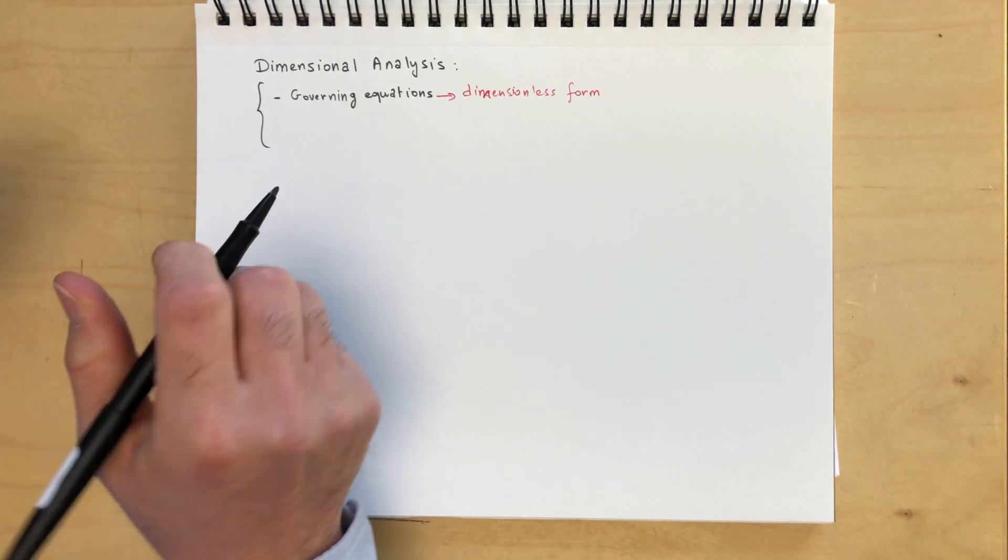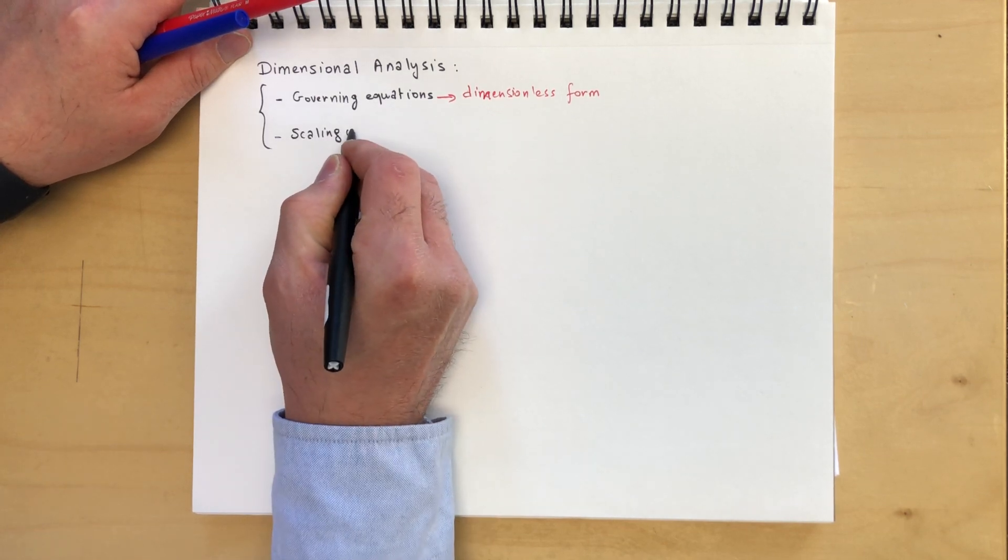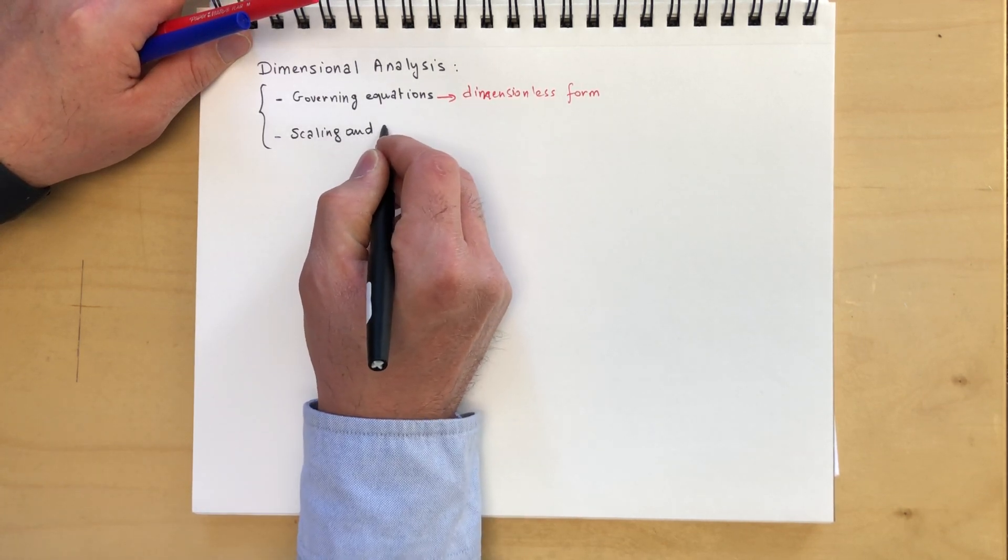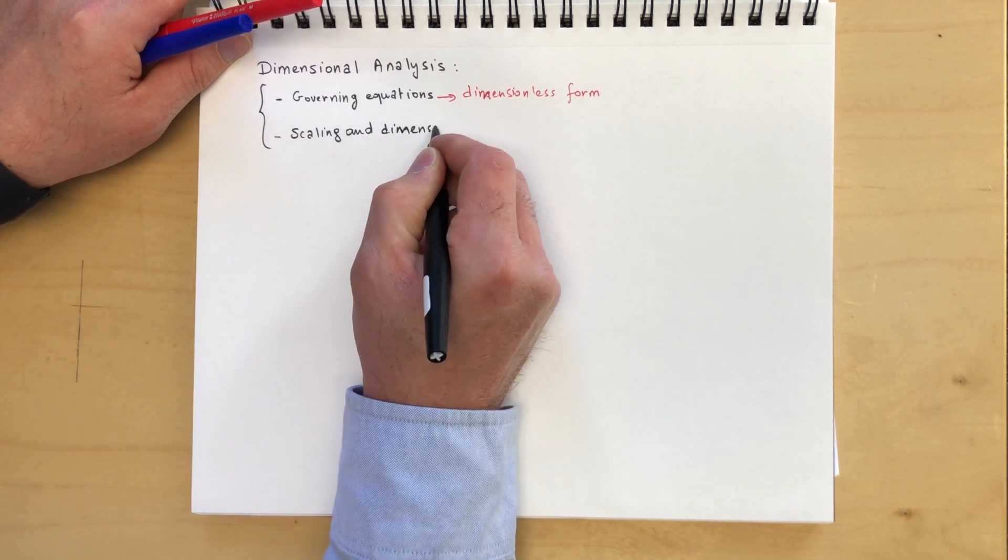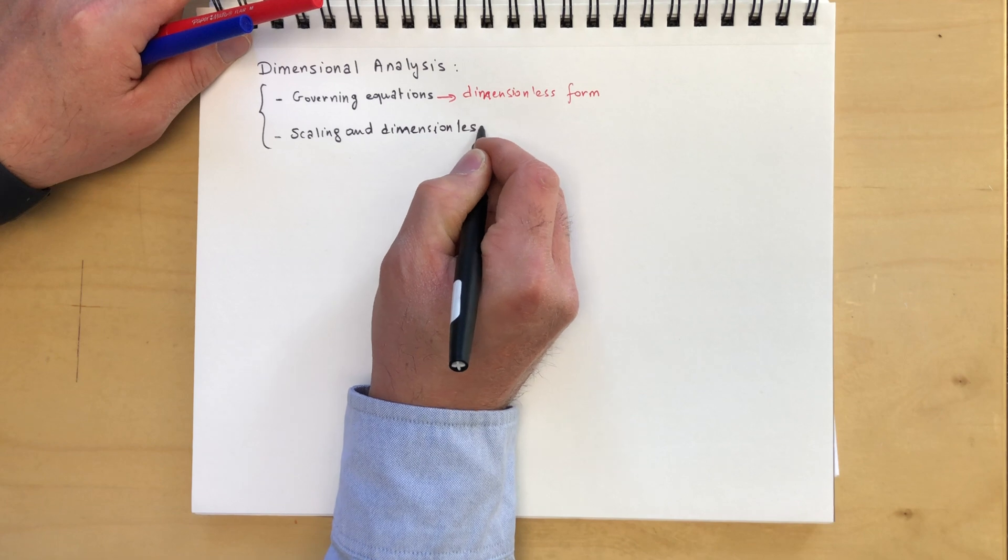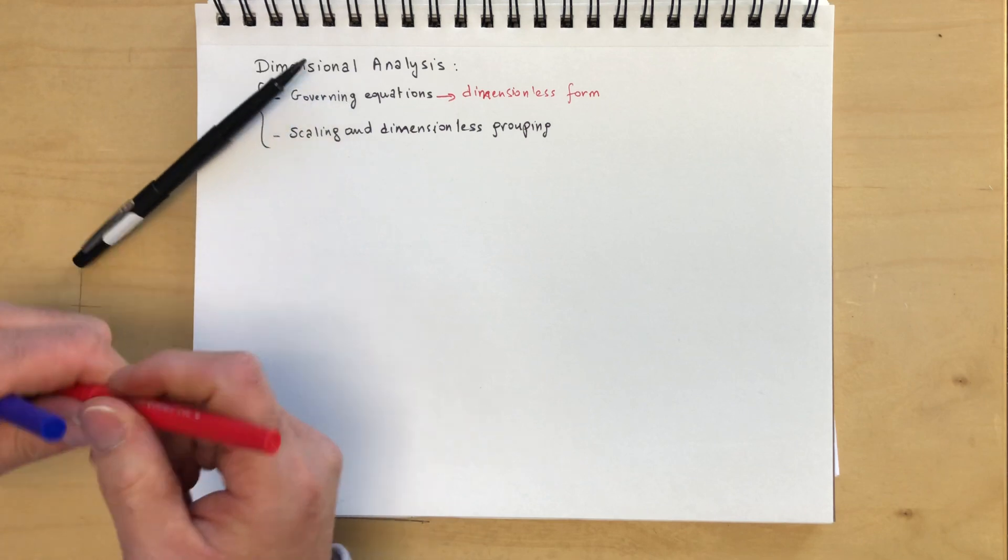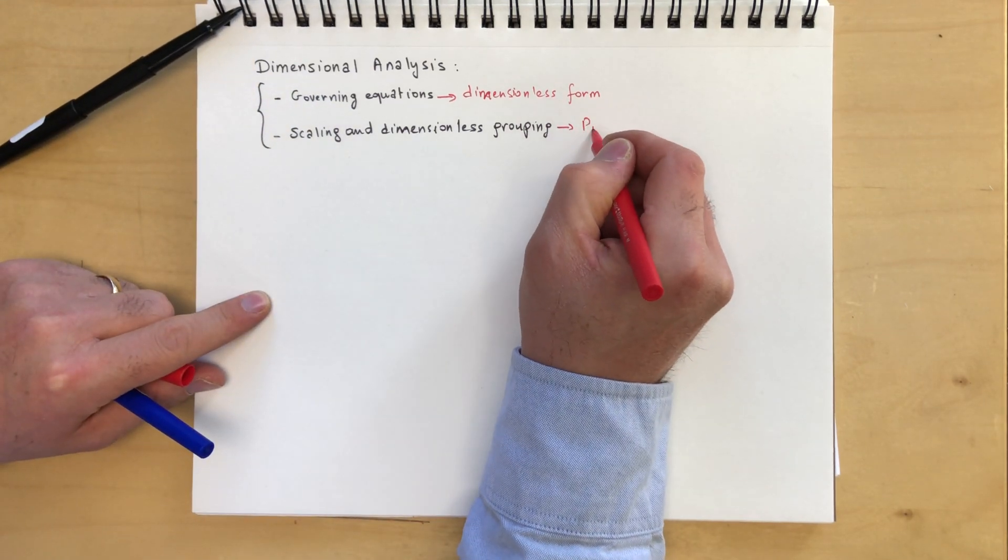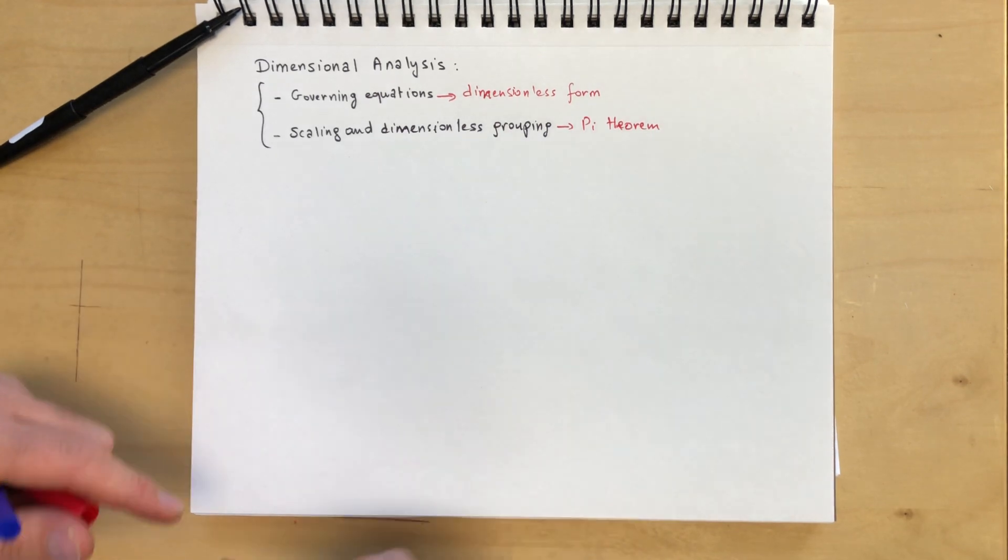And secondly applies into scaling and dimensionless grouping. So that's the infamous Buckingham Pi theorem to help you identify what combination of terms and parameters matter for a given problem or a given experiment.